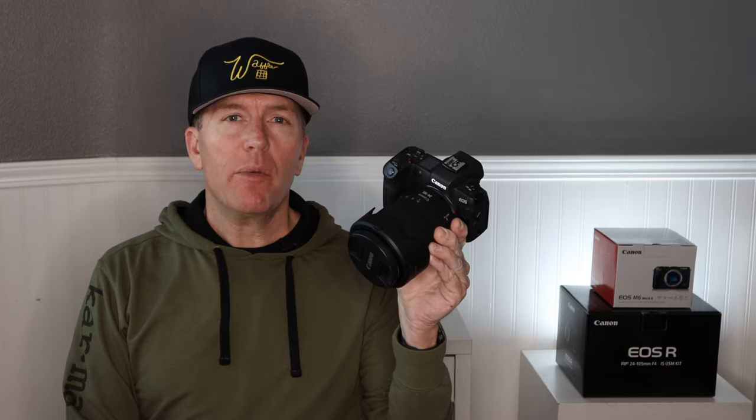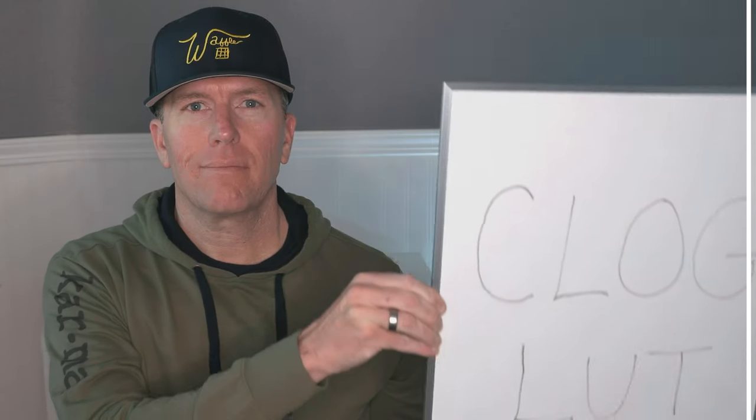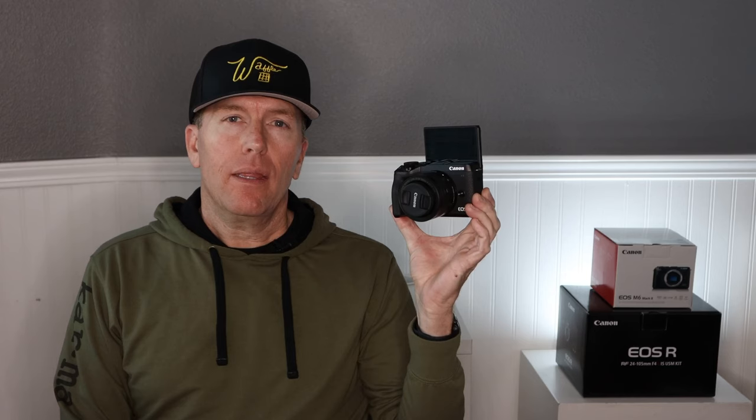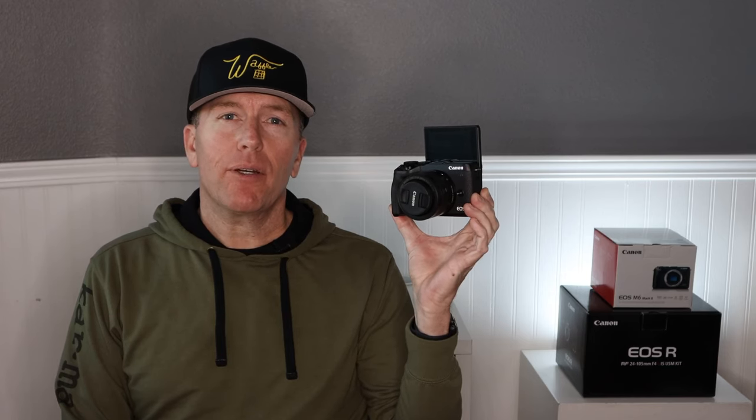For our comparisons, I shot both cameras in 30 frames per second with auto white balance, mostly due to the fact that the Canon M6 Mark II at the time of this shooting does not shoot 4K in 24 frames per second. All footage with the EOS R was shot in 4K C-Log 8-bit in All-I, and the only thing I did to the image was apply the Canon C-Log LUT. The M6 Mark II was shot in 4K with the standard profile, no adjustments whatsoever.